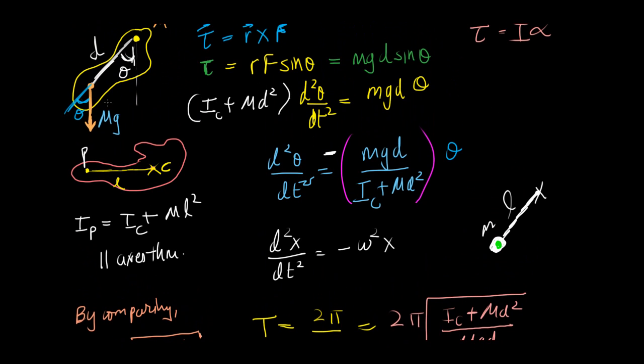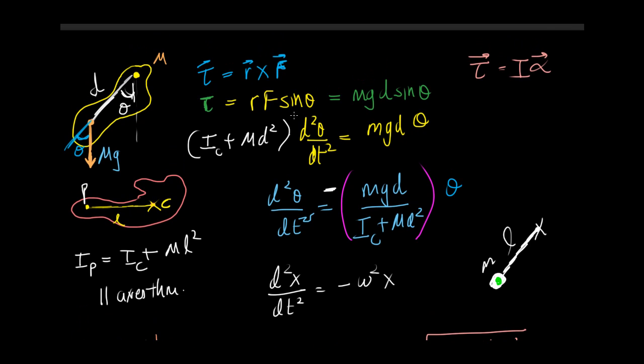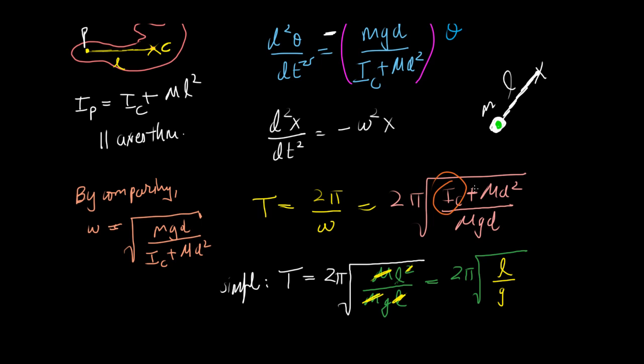If you have a rod, if you have a cone hanging around about some pivot point or a cylinder or something, you just need to know the I of c and you'll get the answer.